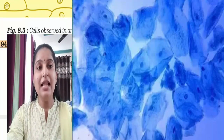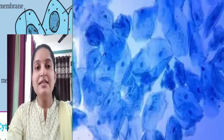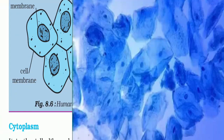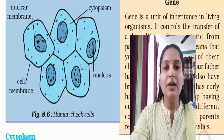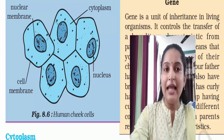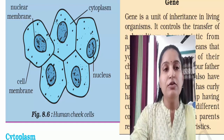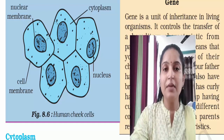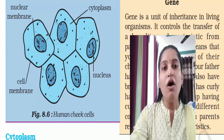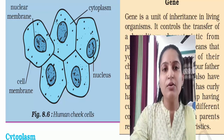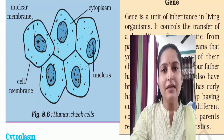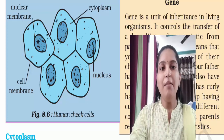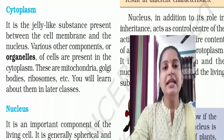So in human cheek cells — which are animal cells — you can see the cell membrane, nucleus, and cytoplasm (shown in light blue). The nuclear membrane surrounds the nucleus, and the outer covering of the whole cell is the cell membrane or plasma membrane. Basically you can see three things: cell membrane, cytoplasm, and nucleus.